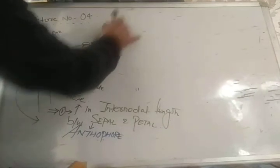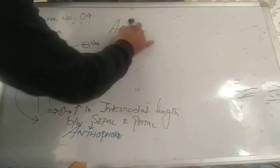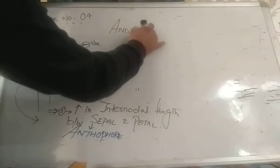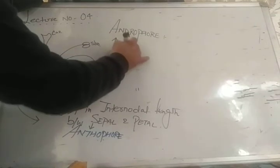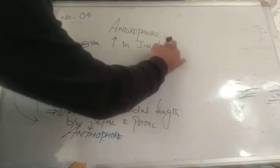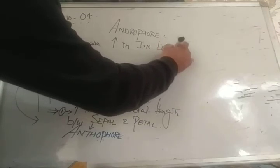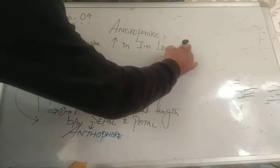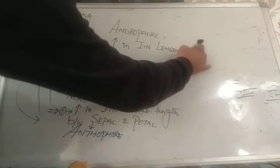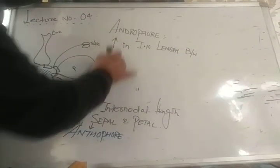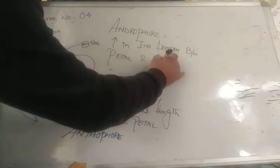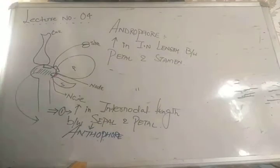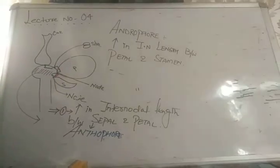Now the second term: I am going to discuss the androphore. What is androphore? It is very easy. If there is an increase in the internodal length between petal and stamen, this condition is called androphore.